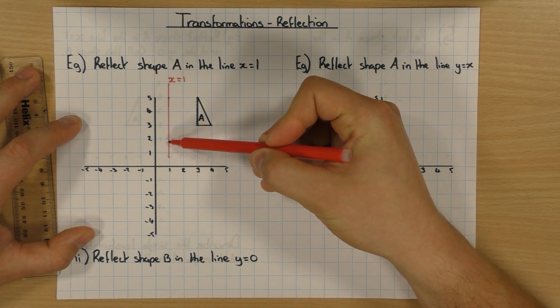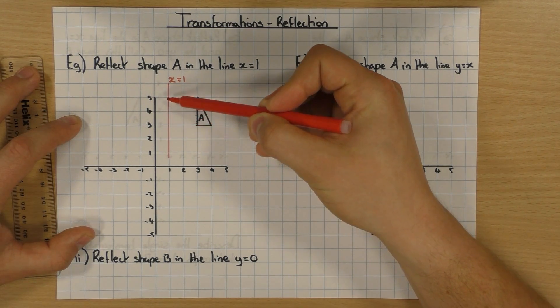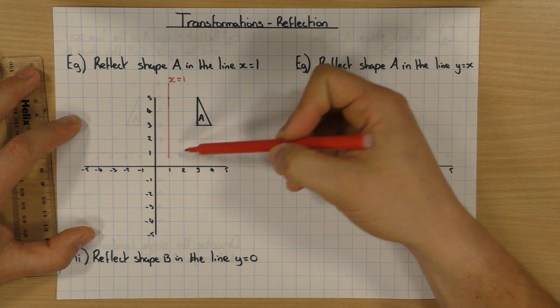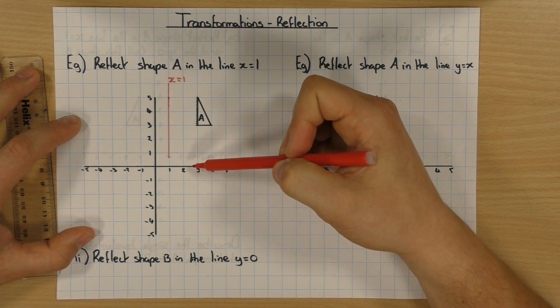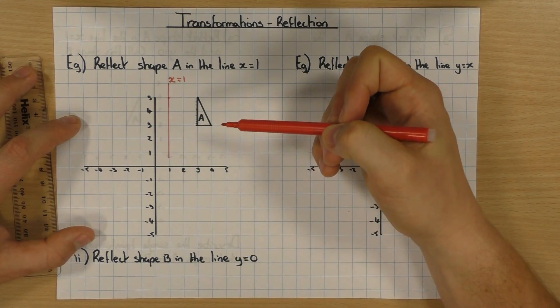every single X coordinate, whether it be 1, 1, 1, 2, 1, 3, 1, 4, 1, 5, every single X coordinate there has the value of 1. So we say that this line has the equation X equals 1, okay?